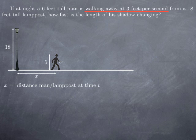What is given to us is the speed of the man, in other words the rate of change of x with respect to time. This is 3 feet per second. This is constant.